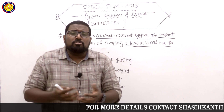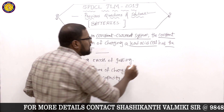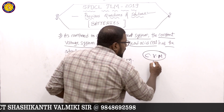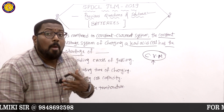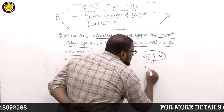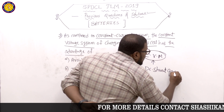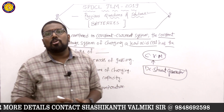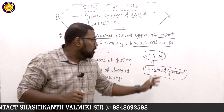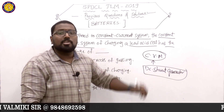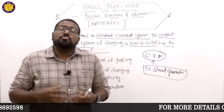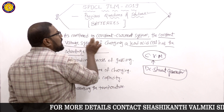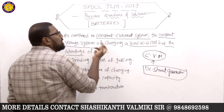The constant voltage method uses a DC shunt generator. A DC shunt generator provides constant voltage. We already know DC machines, so that concept applies here — a DC shunt generator is used for charging with constant voltage.